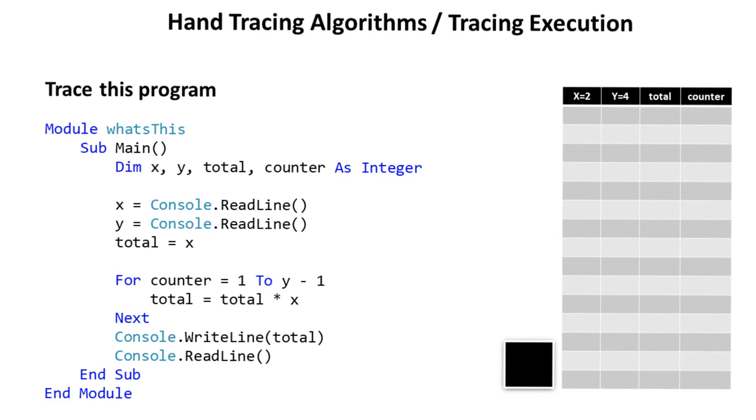Okay. So here's another one. This one's a bit more complex. We've got four local variables: X, Y, total, and counter. Two of them are input by the user when the program starts. And we're going to assume that X is set to two and Y is set to four. Work through this trace table step by step. Unpause the video in a moment and see how well you did.